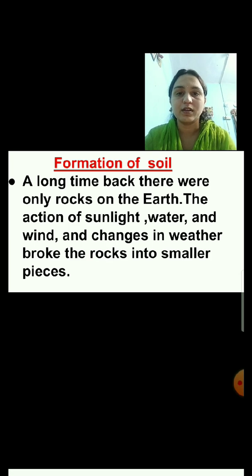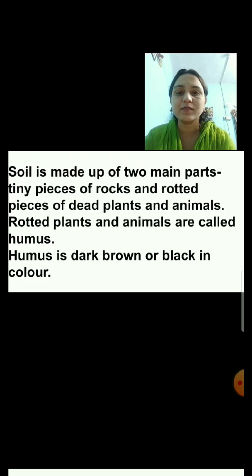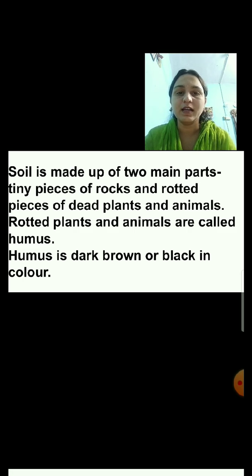Formation of soil. Now we will see how the soil is formed. A long time back, there were only rocks on the earth. The action of sunlight, water and wind, and changes in weather broke the rocks into smaller pieces. Soil is made up of two main parts: tiny pieces of rocks, and rotted pieces of dead plants and animals.